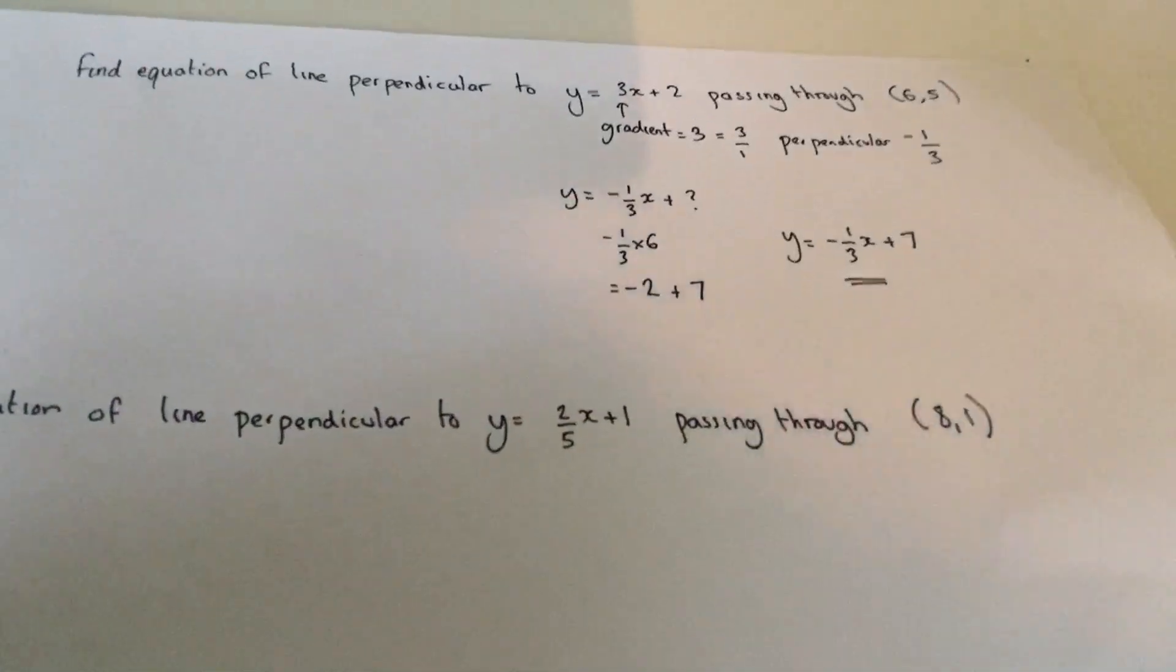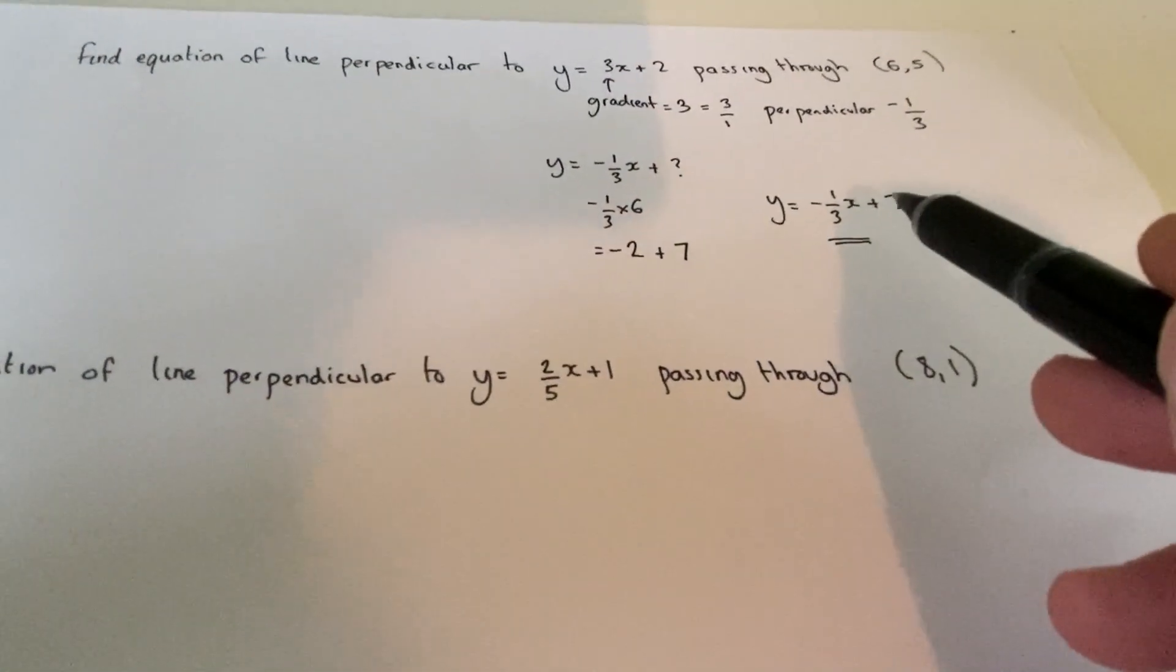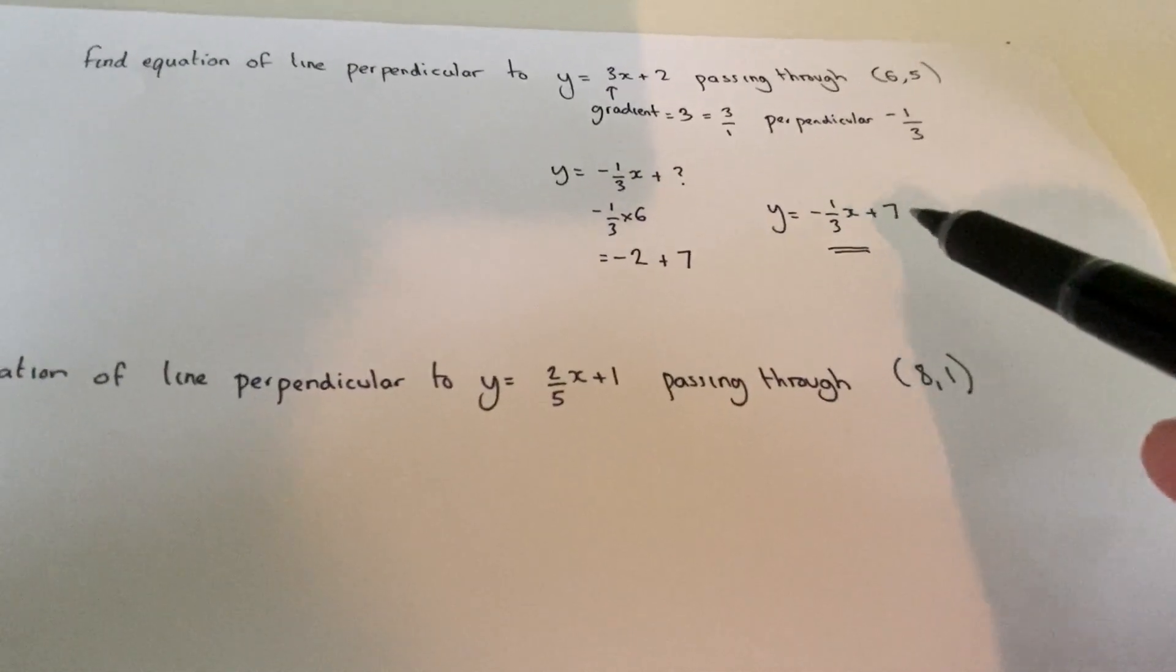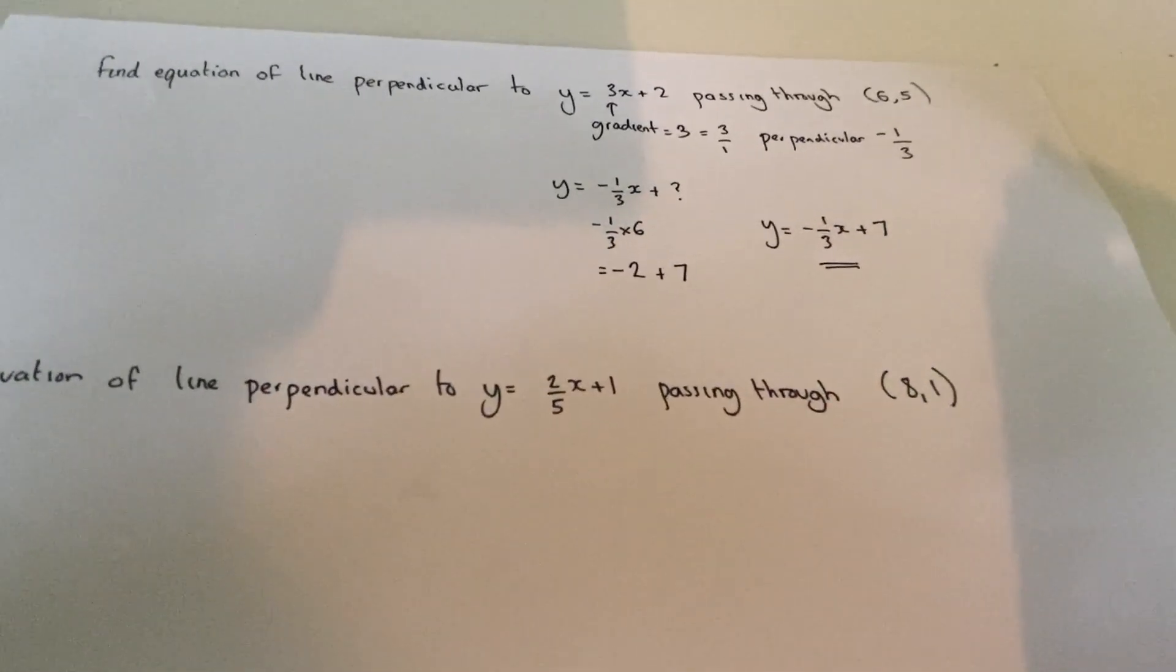So the equation becomes y equals minus a third x plus 7. And any coordinate on the line will satisfy that equation. The gradient is minus a third. The y-intercept is positive 7.